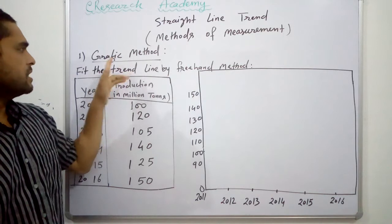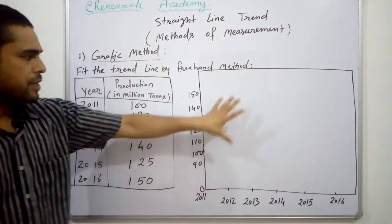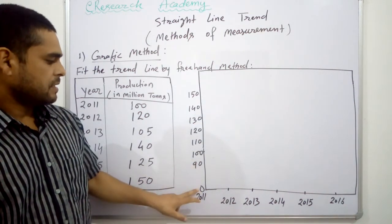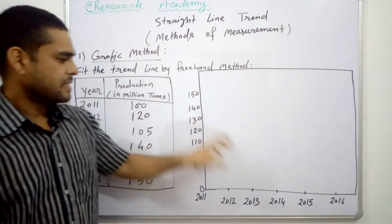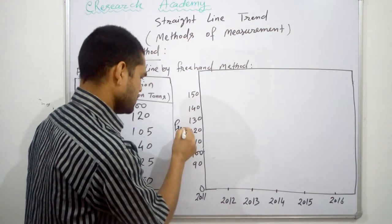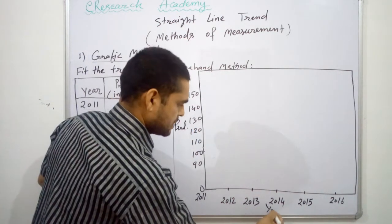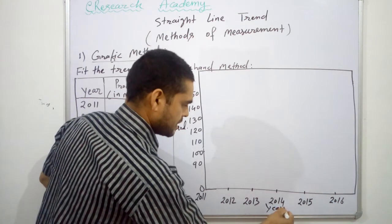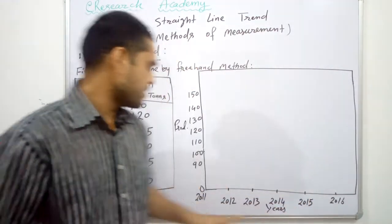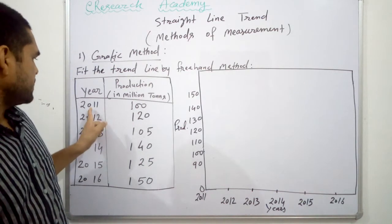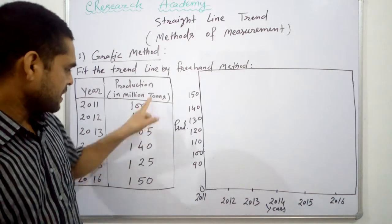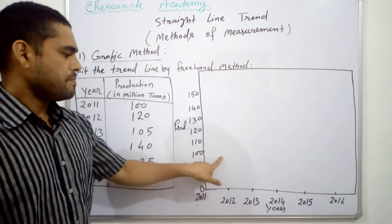We have to find out a straight line trend by freehand method. We are going to just plot these data in the graph. We have the origin here, that is the Y-axis and this is the X-axis. In the Y-axis we have the production, and in X-axis this is time horizon and these are the years. So years are from 2011 to 2016 and the production is from 100 to 150.